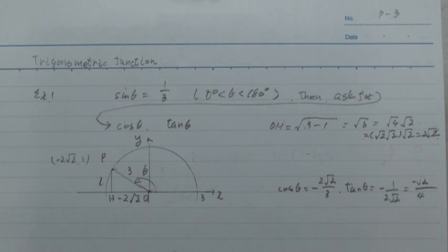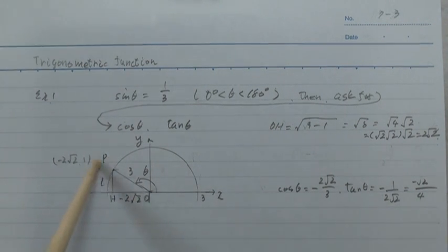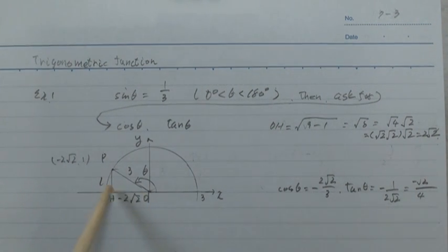Now, tan theta equals 1 over 3. And this is the angle theta at point P. This circle. Now 1 over 3, tan theta, this.